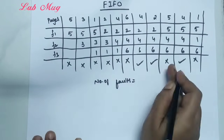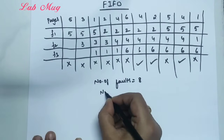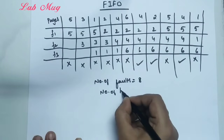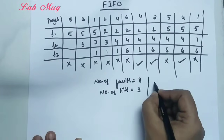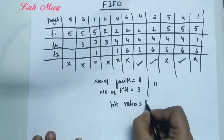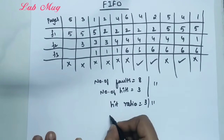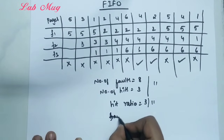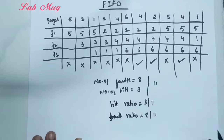Total number of faults: 1, 2, 3, 4, 5, 6, 7, 8 — the total number of faults is 8, and total number of hits is 3. Total pages processed is 11. Hit ratio = number of hits / total pages = 3/11. Fault ratio = 8/11.